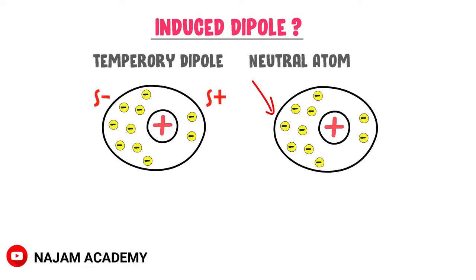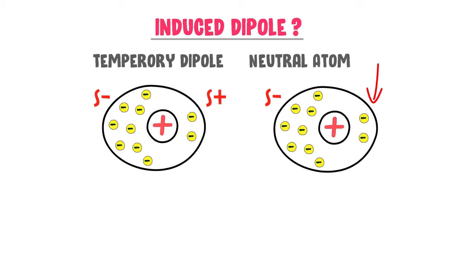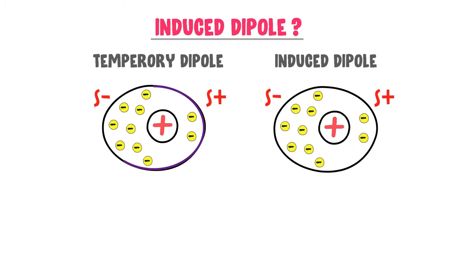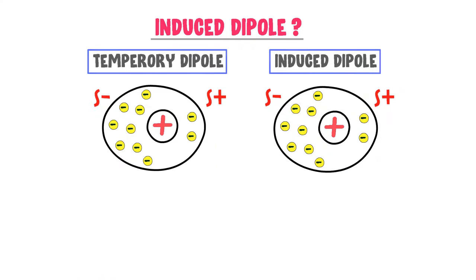This neutral atom becomes polarized. This side contains more electrons, hence a partially negative charge appears on it. This side contains less electrons, or it is electron deficient, hence a partially positive charge appears on it. This dipole is an induced dipole because the temporary dipole induced it by disturbing the arrangement of electrons. Now we have two polarized dipoles: a temporary dipole and an induced dipole.